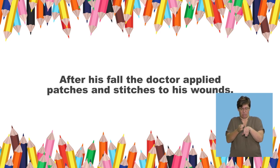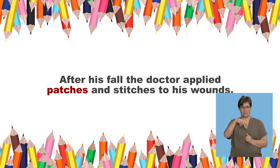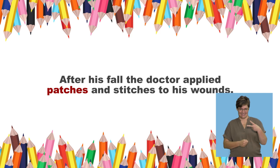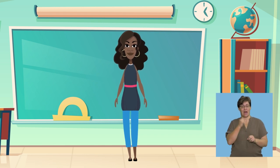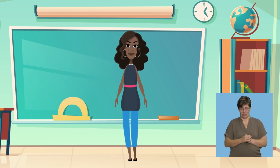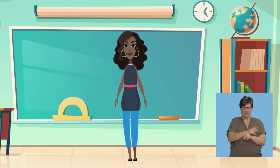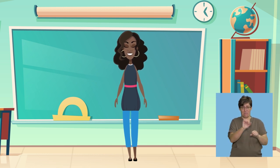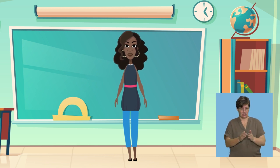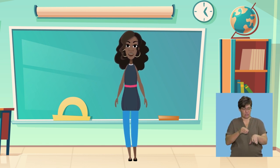Let's try one more sentence: After his fall, the doctor applied patches and stitches to his wounds. Which words in that sentence have the ch sound? Patches and stitches. Great stuff — patches and stitches. Let's say all three sentences together. My dad went to fetch a car with a broken clutch. He fell into a ditch and was covered in pitch black coal. After his fall, the doctor applied patches and stitches to his wounds.